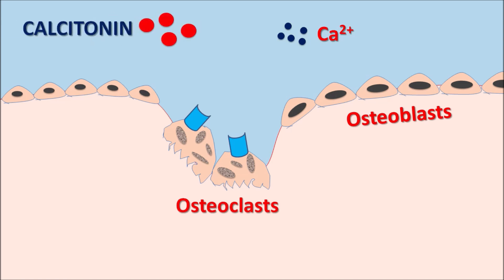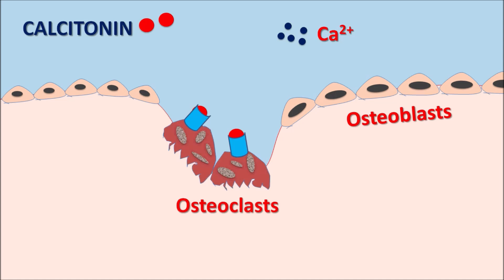Calcitonin can bind to calcitonin receptors present on the osteoclasts. When it binds to these receptors, it produces an inhibitory response on the osteoclasts, thereby inhibiting their activity. When osteoclasts are inhibited, the bone resorption process is controlled. At the same time, calcitonin can stimulate osteoblast formation so that new bone cells are formed, which again prevents bone deformation. In this way, calcitonin has a protective action on the bone.